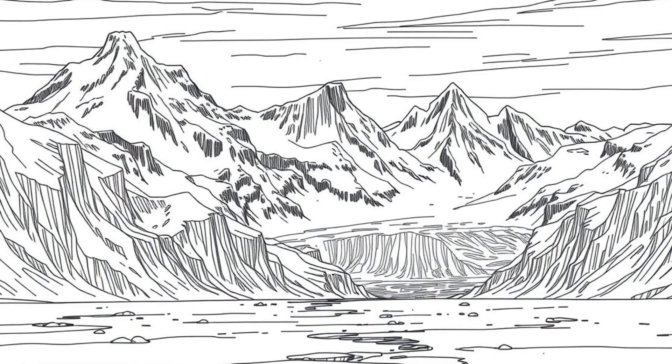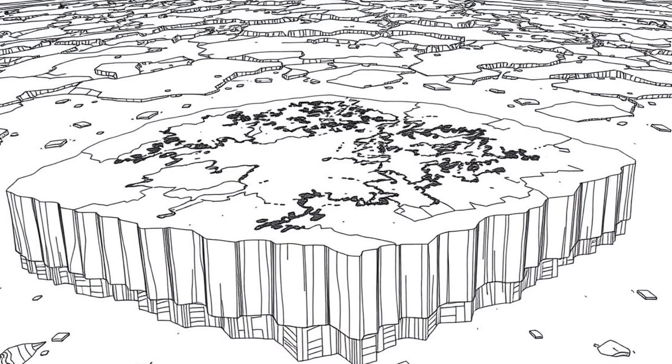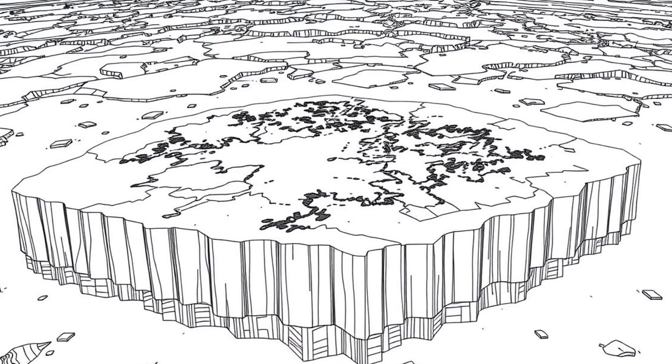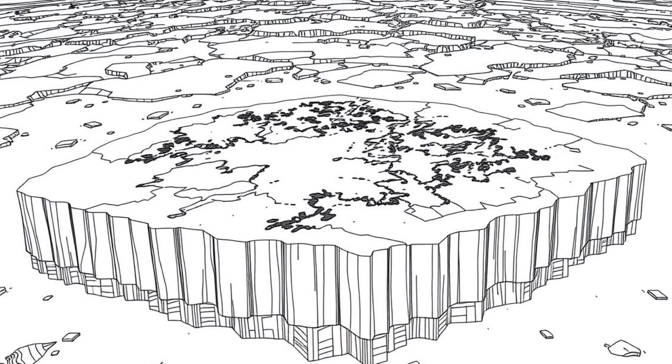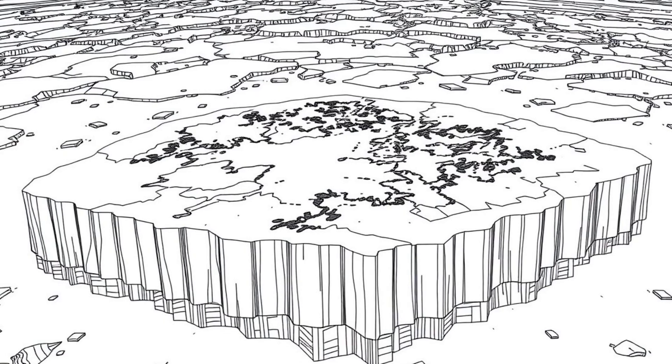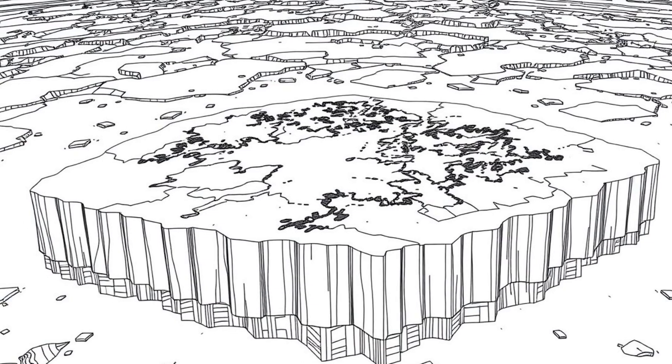At that time, much of Canada was covered by an enormous ice sheet called the Laurentide Ice Sheet. This sheet was several kilometers thick and weighed so much that it literally pressed down on the Earth's crust, pushing it deeper into the planet's mantle.